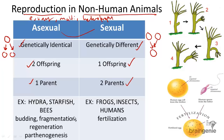Another major difference is that asexual reproduction can occur through some processes called fragmentation and regeneration, and also through parthenogenesis and budding. As shown in the picture on the right of hydra,